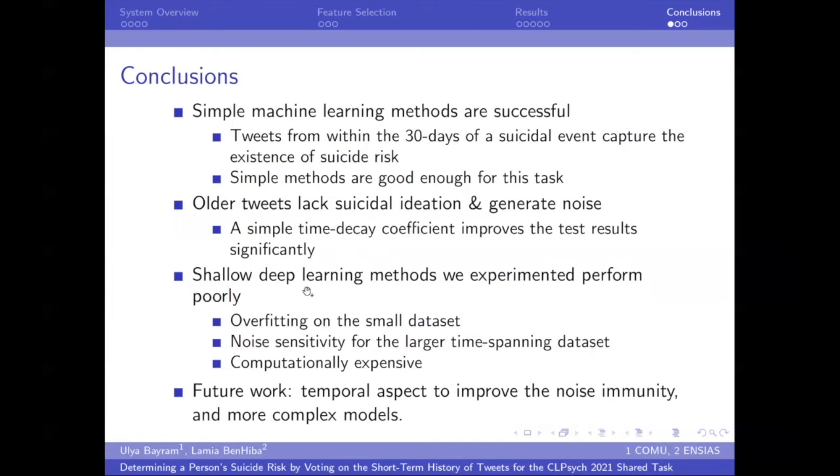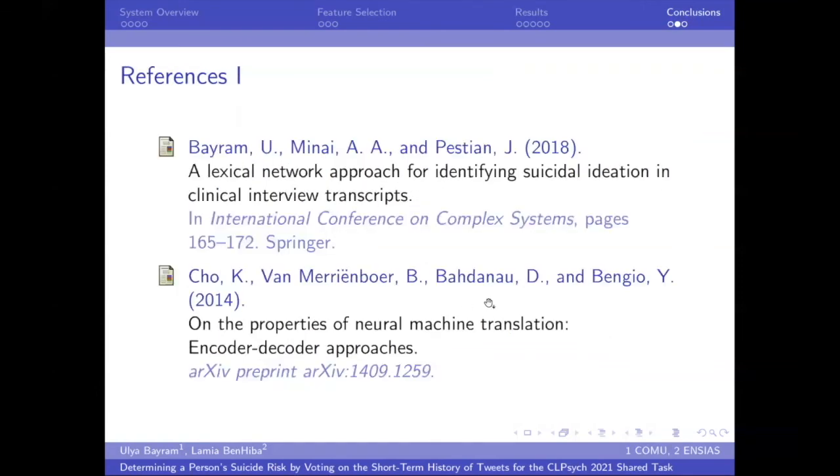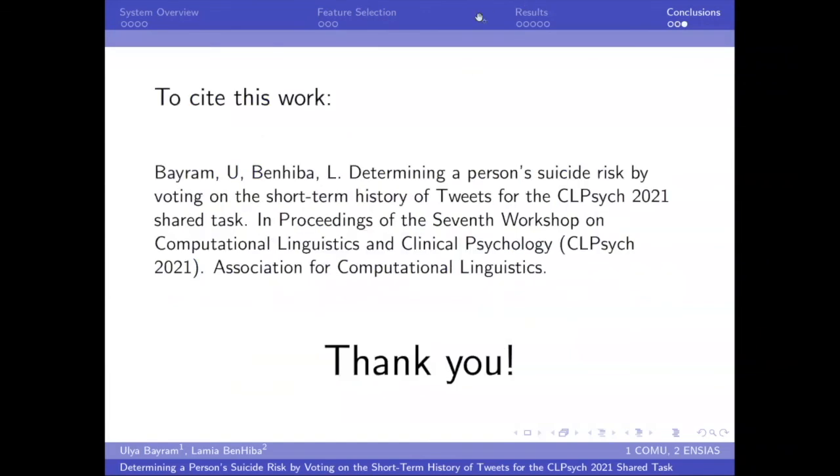And we obtain poor performance from evaluating deep learning with the shallow deep learning methods because of overfitting, noise sensitivity, and they're computationally expensive. So we should ask ourselves should we completely rely on deep learning methods or should we also evaluate simple machine learning methods on our problems as well after fairly tuning them, of course. And in future work, we consider conducting further experiments with the temporal aspects. And these are references and thank you for listening.